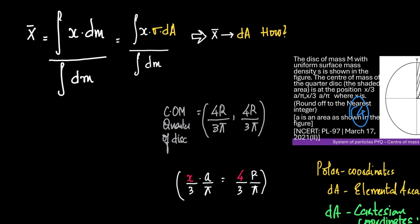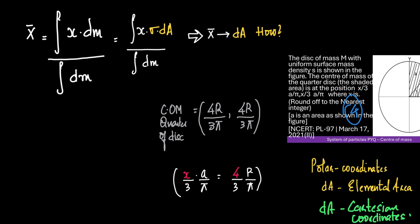And since the mass is not specified here, it is given that the disc is only of mass M and with uniform surface mass density, if we call that uniform surface mass density as σ, what is σ equal to? Sigma will be equal to M by A. Therefore, M will be equal to σ times A. So we can say that dm will be equal to σ times dA.